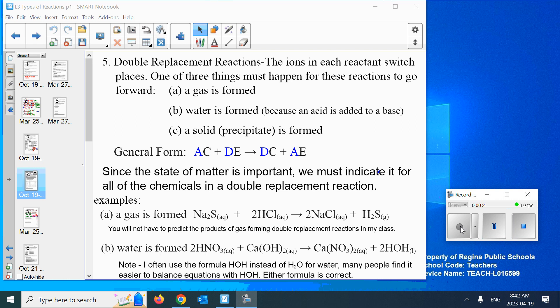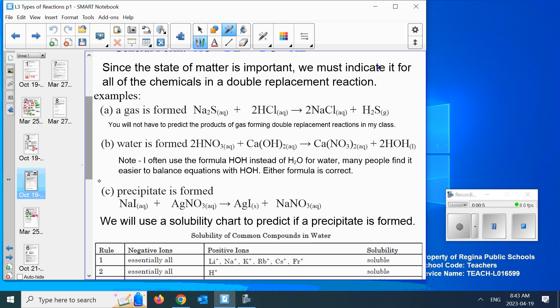What is a double replacement reaction? It's where two things switch places. They're both in compounds to start. The idea is that A and B switch places, or you can think of it as the anions switch places. And I've mentioned that on double replacement reactions, I require you to put the state of matter: aqueous, solid, liquid, or gas.